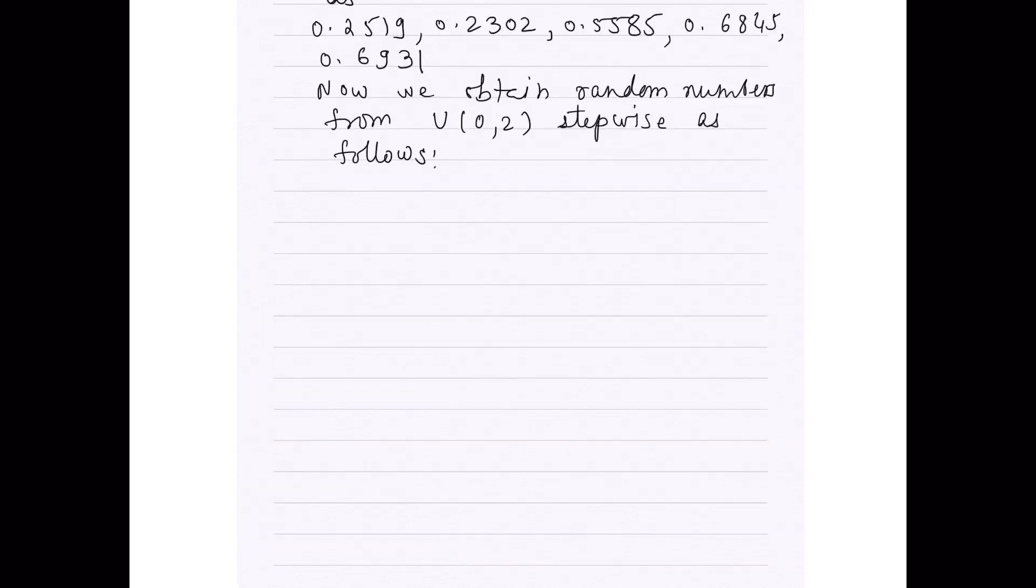Finally, we obtain random numbers from uniform 0 to 2 stepwise as follows. First column is for serial numbers. They are 1, 2, 3, 4, 5 as we want 5 numbers. Second column is for F(x), the values which you have obtained above, and the last column is for x. The formula what we have received is x equals 2 times F(x).